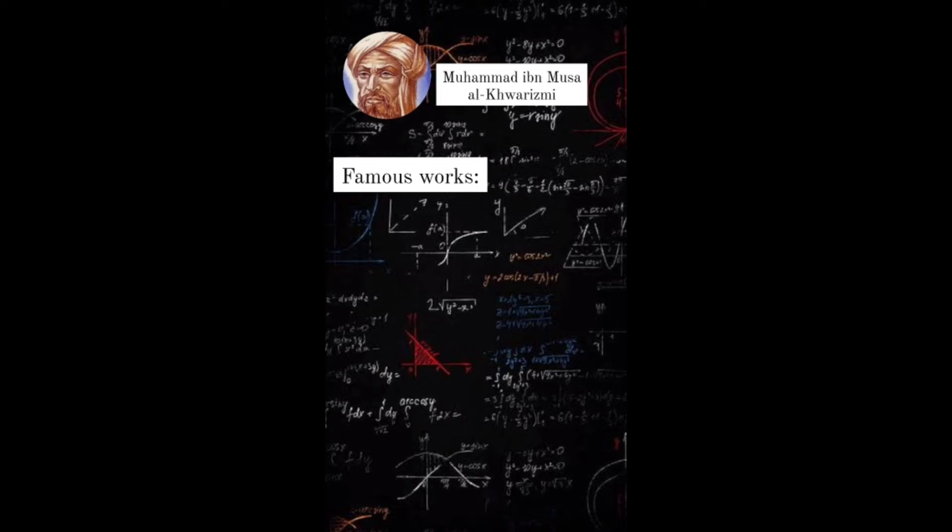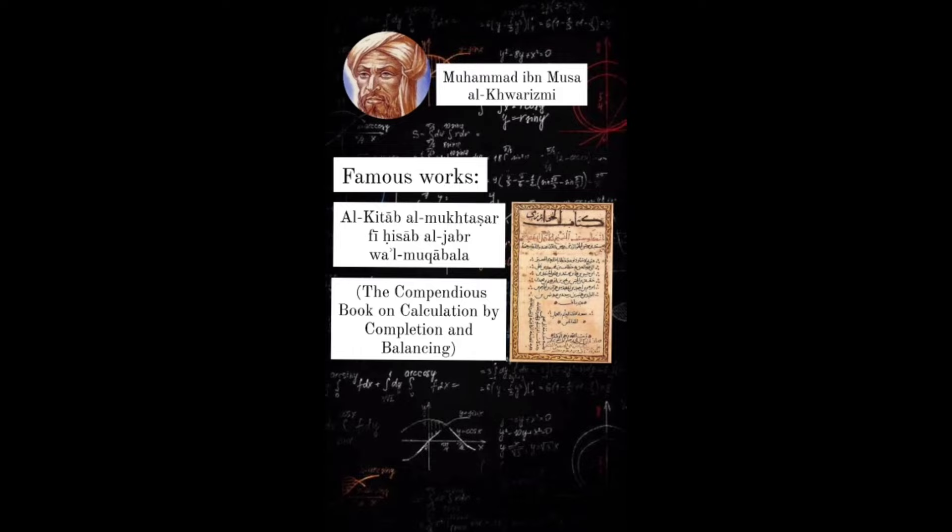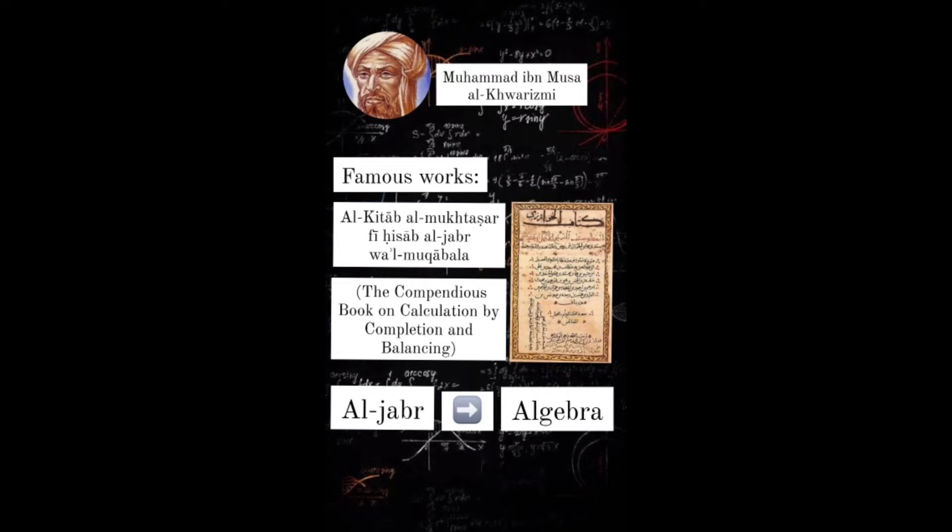Famous works: His first work was Al-Kitab al-Mukhtasar fi Hisab al-Jabr wal-Muqabala, or the Compendious Book on Calculation by Completion and Balancing. The term algebra was derived in this work of al-Khwarizmi, from Al-Jabr to Algebra.